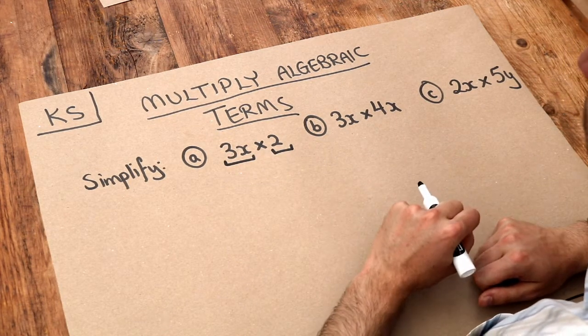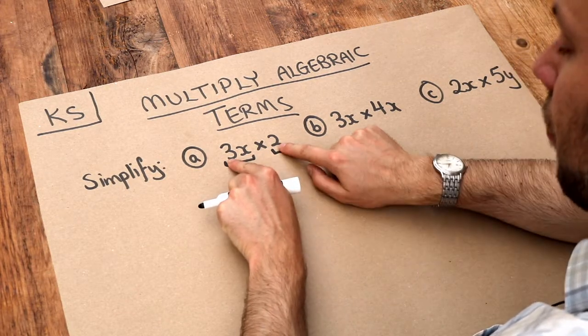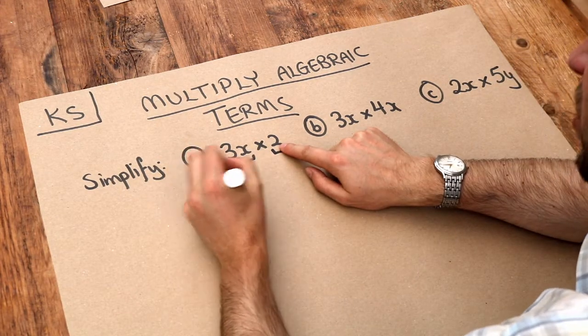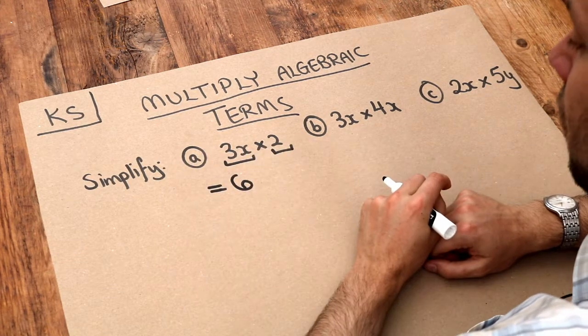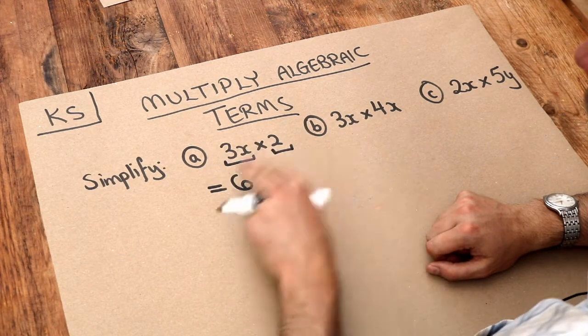Now when you want to multiply these algebraic terms, you multiply the numbers first, so we've got the 3 times the 2, which is just 6, and then we look for any letters. Well we've just got the x, so we're going to put the x here. And that is it.